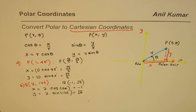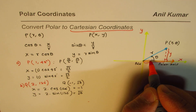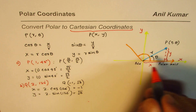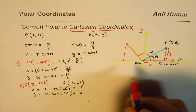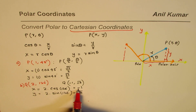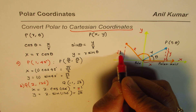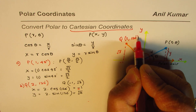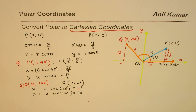Let us verify this. For Q at (2, 120°): 120° is 90° plus 30° more, so the point lies in the second quadrant. The x value is negative, which makes sense. The distance is 2 units, the y distance is square root of 3 and is positive. So that is point Q, which is (2, 120°) in polar coordinates but (-1, √3) in Cartesian coordinates.